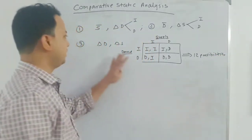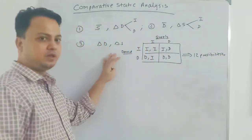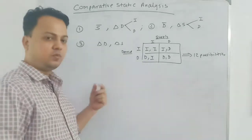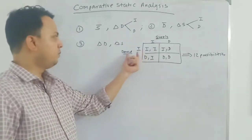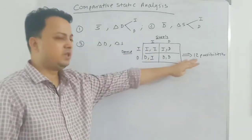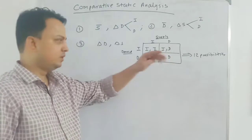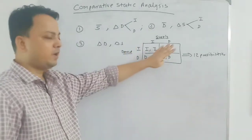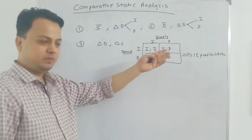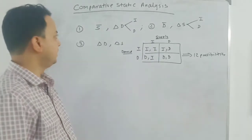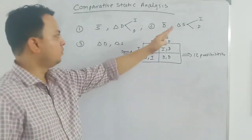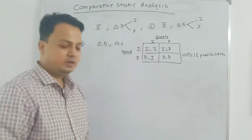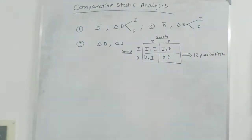We are going to look at when demand and supply change together, starting from the old equilibrium and examining the changes that take place. When demand and supply both increase there will be 3 possibilities, and when demand increases and supply decreases there will also be 3 possibilities. So we are going to look at all 16 possibilities in this comparative static analysis.